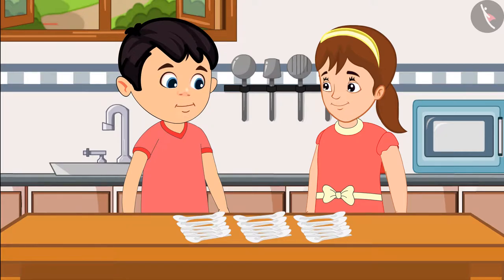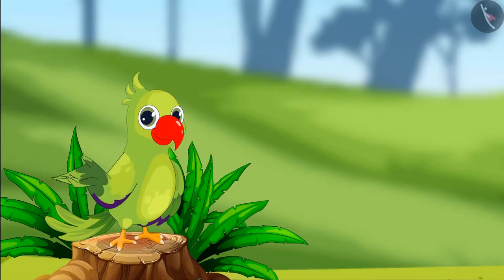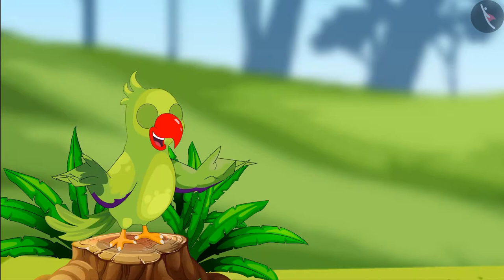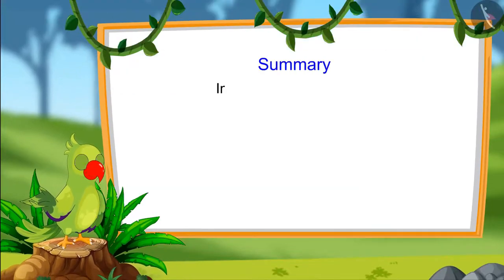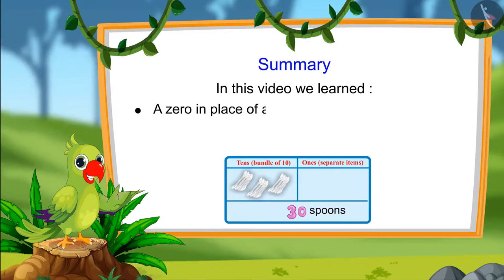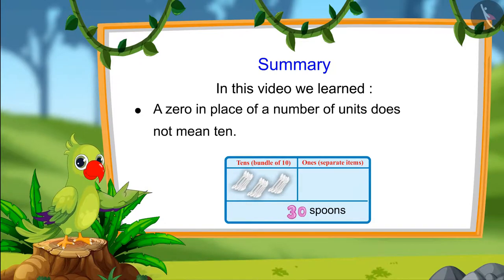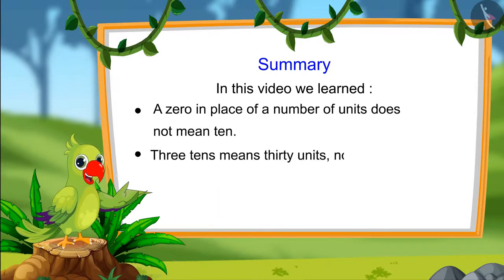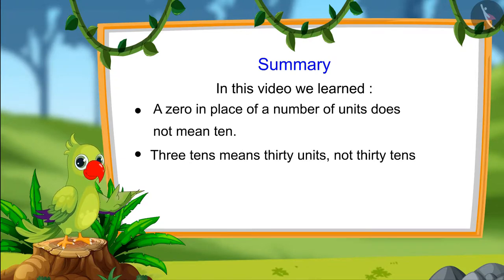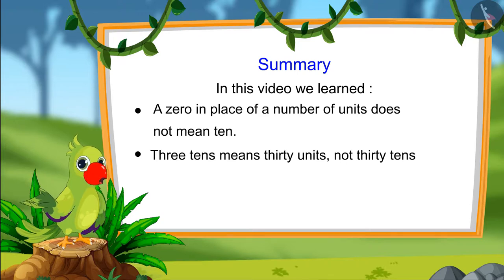So children, that's all for today! In this video we learned that zero does not mean 10 at the end of a number, and that three tens means 30 units — not 30 tens. I hope you would have understood this topic. Bye, friends!